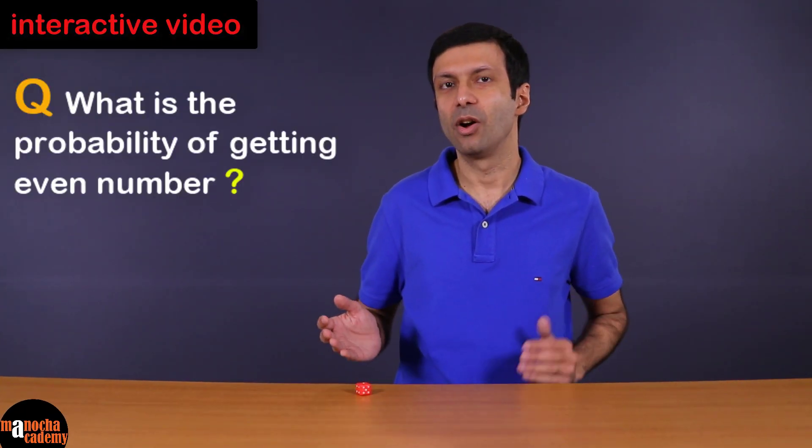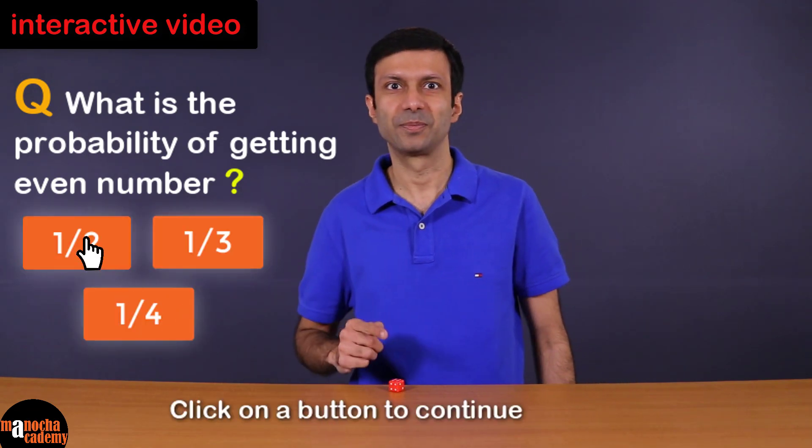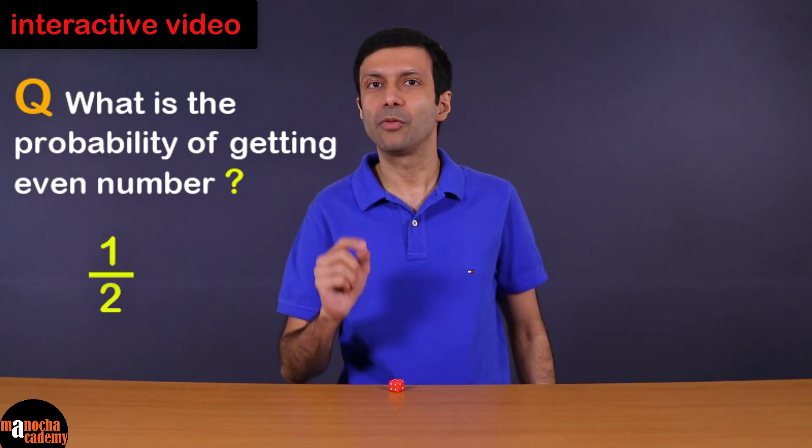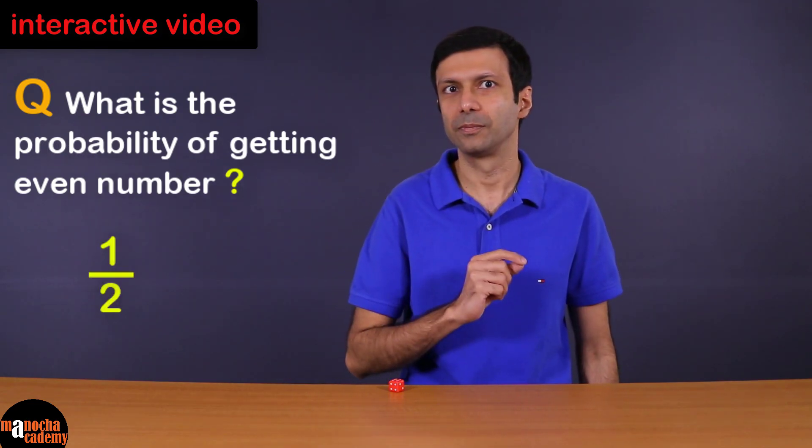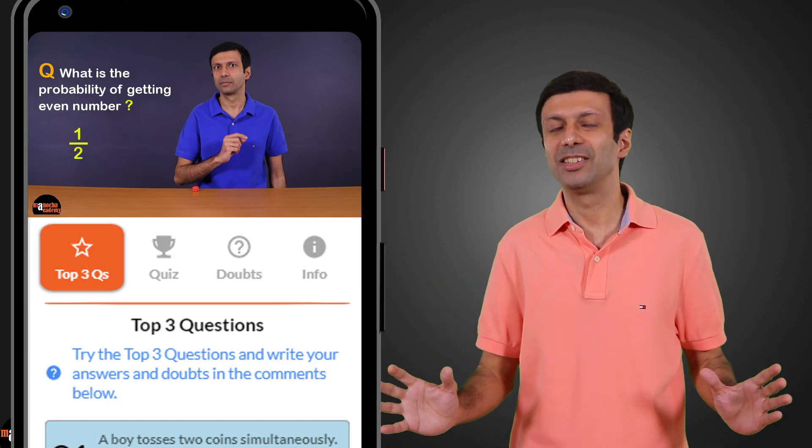Now what is the probability of getting an even number when you roll a dice? That's right! The probability of an even number is half. The interactive videos will help you think and remember the concepts better.